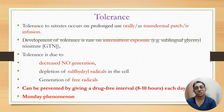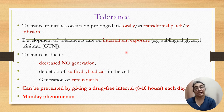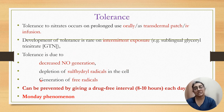A major drawback of nitrates is tolerance. Tolerance develops with prolonged oral, transdermal, or intravenous use of nitrates. Tolerance development is rare with intermittent exposure such as sublingual glyceryl trinitrate. Mechanisms of tolerance include decreased nitric oxide generation, depletion of sulfhydryl radicals in the cell, and generation of free radicals. Tolerance can be prevented by giving a drug-free interval of 8 to 10 hours.